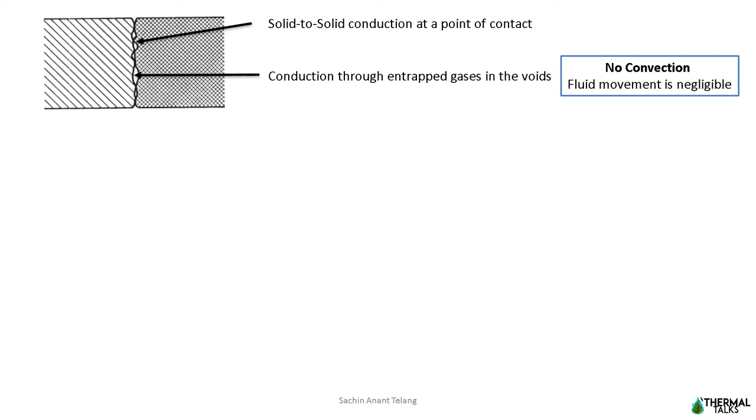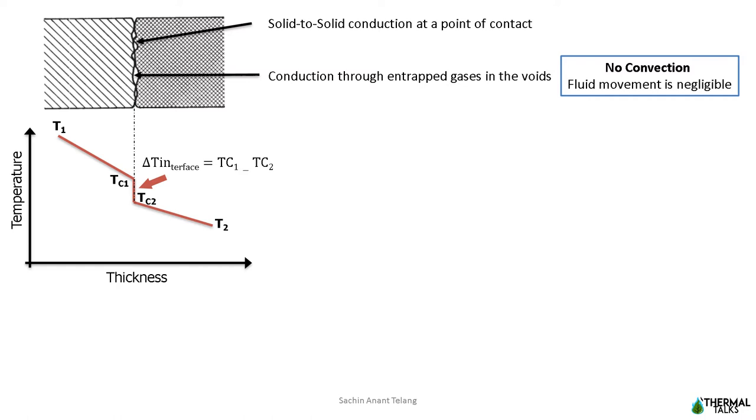An interface offers some resistance to heat transfer in two ways: solid to solid conduction at point of contact and conduction through entrapped gases in voids. It is important to note that there is no convection in interfacial gases as size of interfacial voids are very small and fluid movement is negligible. Another factor for thermal resistance is that the thermal conductivity of gases are quite small compared to solids. Hence, there exists a temperature drop at the interface and the temperature profile is not continuous.